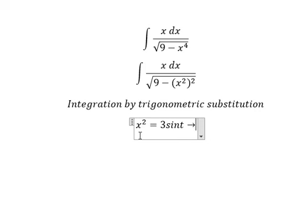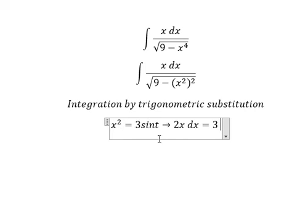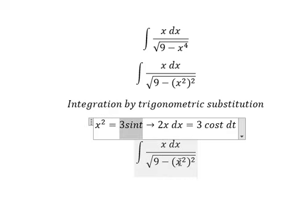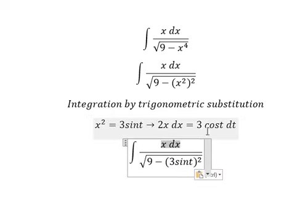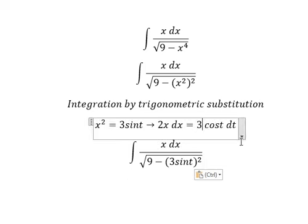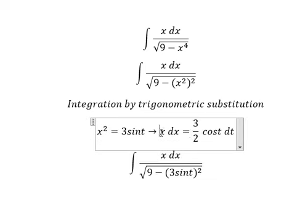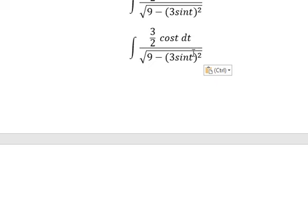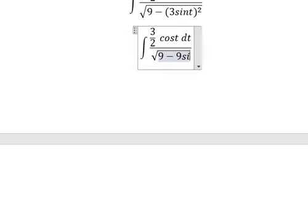We need to do the first derivative for both sides. 2x equals cos(t). I will put this in here. Since we don't have the number two, we need to divide both sides by number two.